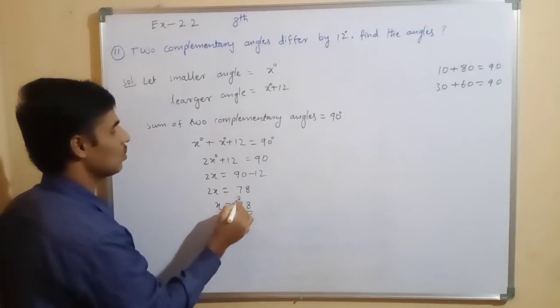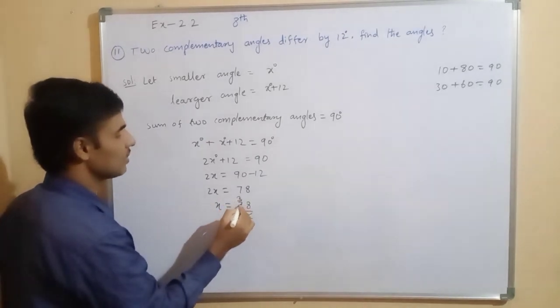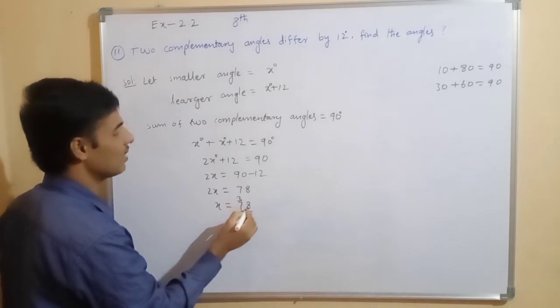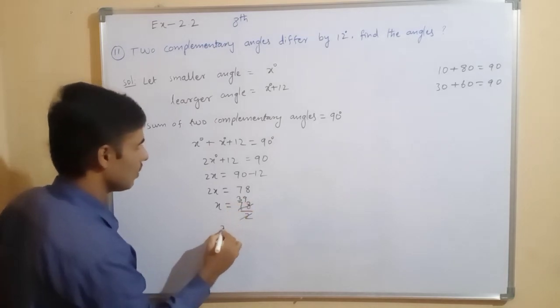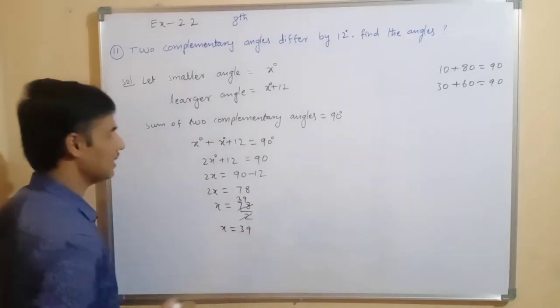Now, 2 into 1, 2, 3 into 2 is 6, 7 minus 6, 1, 18, 2 into 9. So, x equal to 39 degrees.